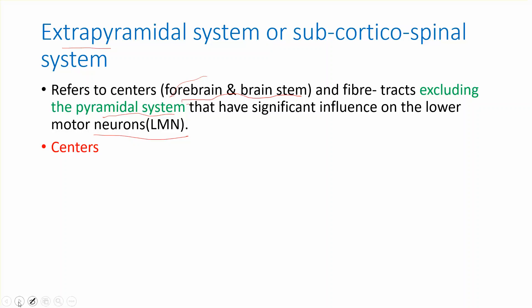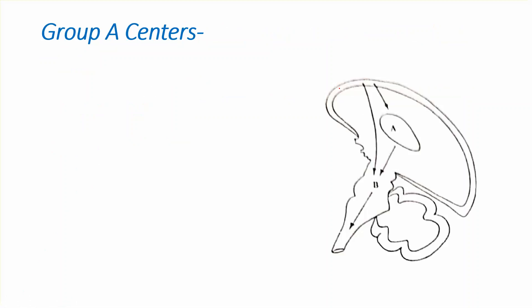We can see two centers related to the extrapyramidal system: Group A center and Group B center. The Group A center receives direct information from the cerebral cortex, whereas Group B receives information from Group A and also information from the cerebral cortex.